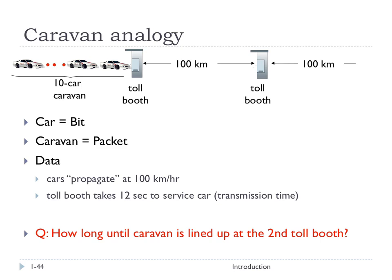Well, the book has this analogy with cars and toll booths. That may or may not help you. In this example, a car is going to be kind of like a bit. And we're going to have this caravan of 10 cars that represents a packet. The toll booths are going to represent routers or maybe hosts, if you want to think about it more generally. We're going to say that cars can propagate at 100 kilometers an hour. And the toll booth takes 12 seconds to service a car. So that's analogous to the transmission time. So it takes 12 seconds at each toll booth. So the question is, how long will it be until the caravan is lined up at the second toll booth? How long does it take to push this entire caravan as they're lined up at the first toll booth and get them to be at the second toll booth?